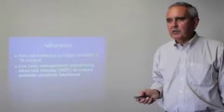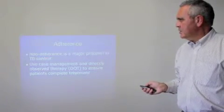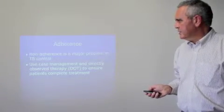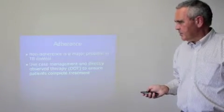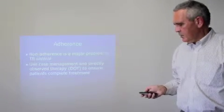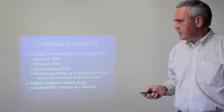The treatment of standard tuberculosis includes a four-drug regimen which continues for two months, followed by a two-drug regimen for four months. Non-adherence to treatment is a major problem and contributes to the development of resistant disease, and we like patients to have directly observed therapy (DOT) treatment to ensure they are adherent to their treatment and complete the course.